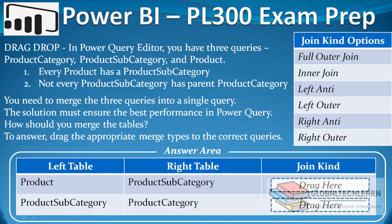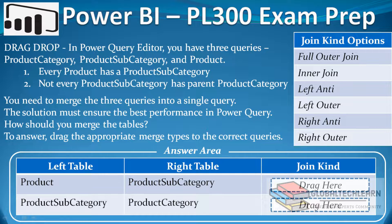The question is based on the merge transformation in Power BI Query Editor. In Power Query Editor you have three queries: product category, product subcategory, and product. Every product has a product subcategory, and not every product subcategory has a parent product category. You need to merge these three queries into a single query, and the solution must ensure the best performance in Power Query.